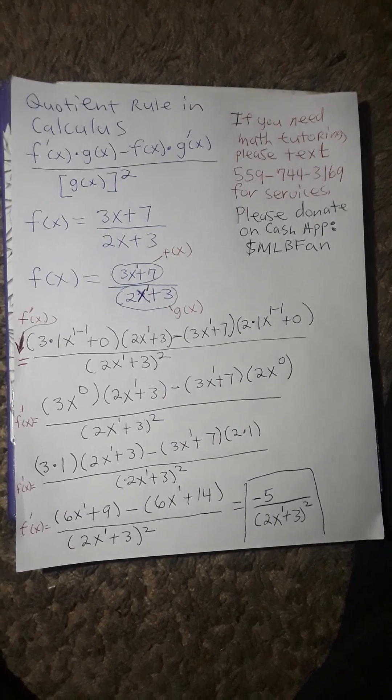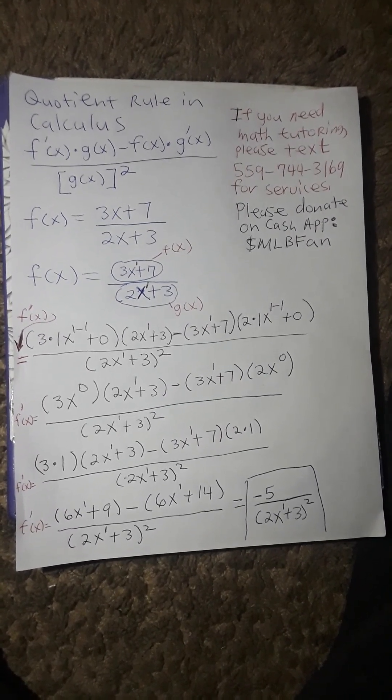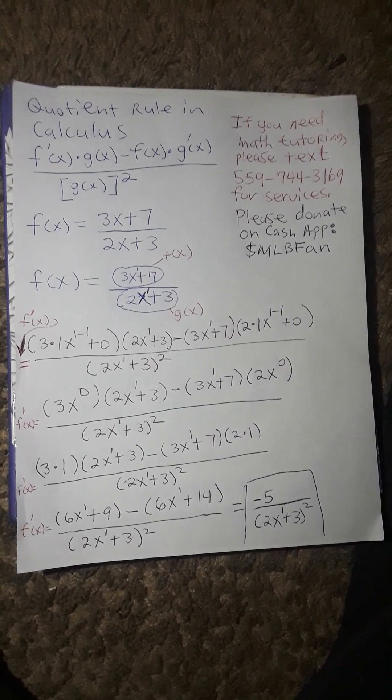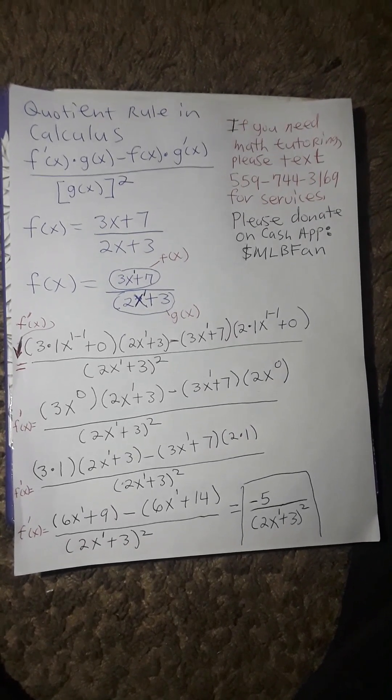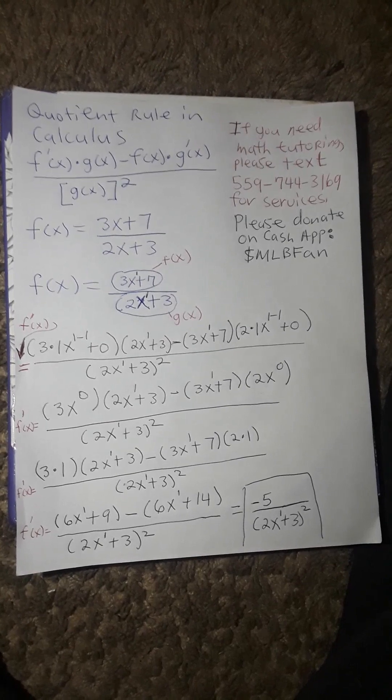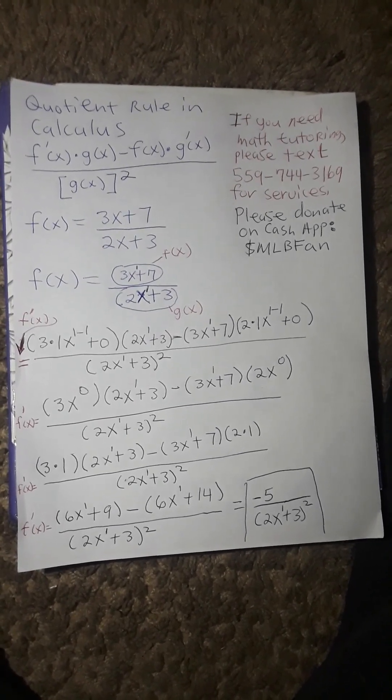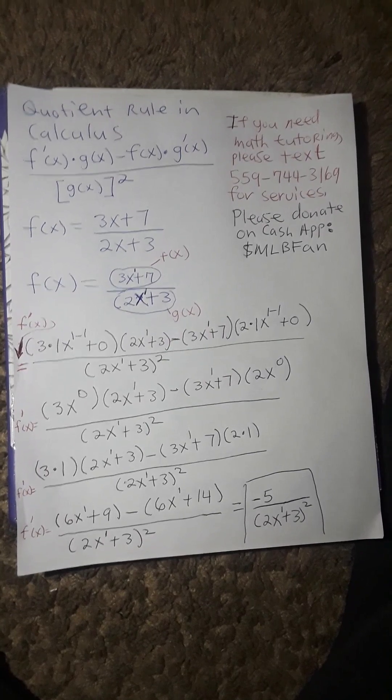Now, when we simplify, 6x to the 1 minus 6x to the 1 cancels out. Then you do 9 minus a positive 14, which will yield negative 5. So, the derivative is equal to negative 5 divided by 2x to the 1 plus 3 to the 2 power.